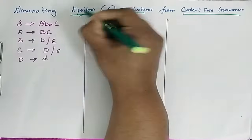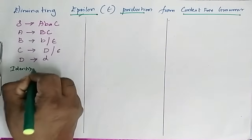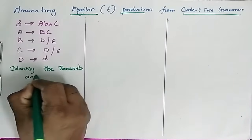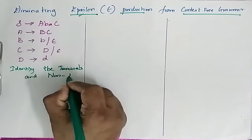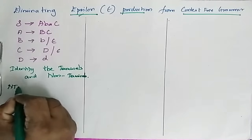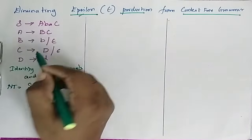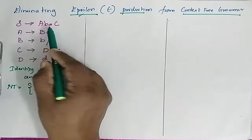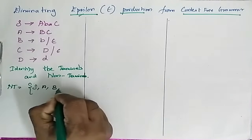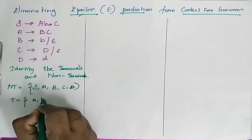In order to eliminate epsilon, first we have to identify the terminals and non-terminals. The non-terminals are S, A, B, C, D. The terminals are a and b.